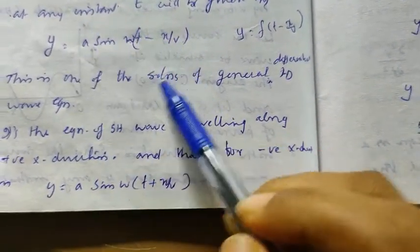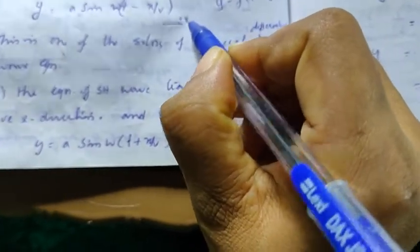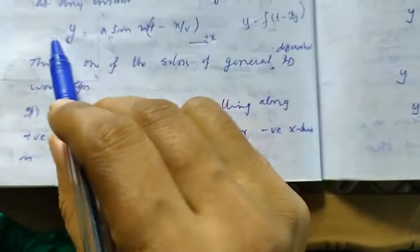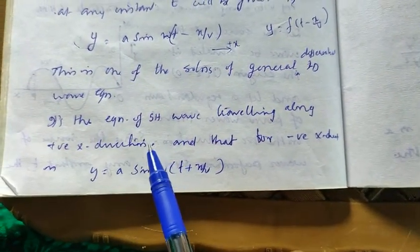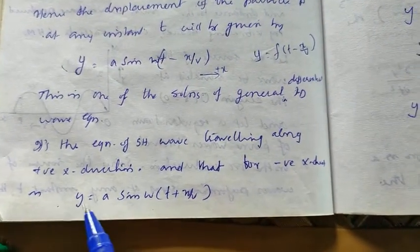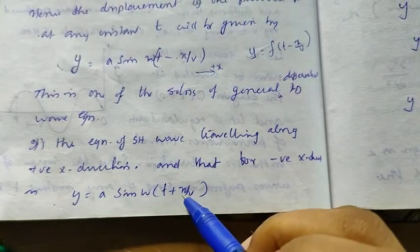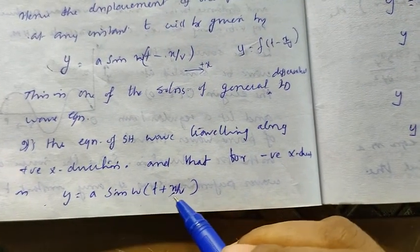The equation y = a sin ω(t − x/v) represents a wave traveling in the positive x direction. For a wave traveling in the negative x direction, the displacement expression becomes y = a sin ω(t + x/v).